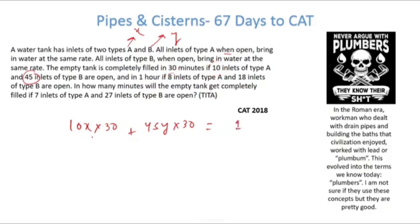And in 1 hour if 8 inlets of type A, so 8x times 60 and 18y times again 60, that should also be equal to 1. If I just equate the two, here I have 300x, here I have 480x, so one side I will have 180x. Here I have 1350 and here I have 1080, so I have 270y on the other side. So x becomes 3y/2.